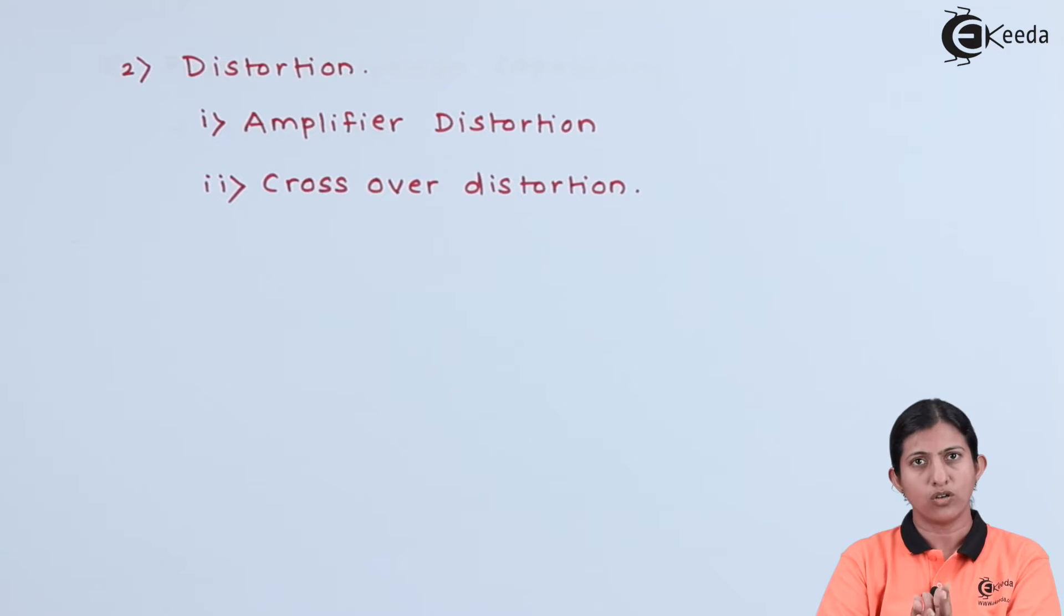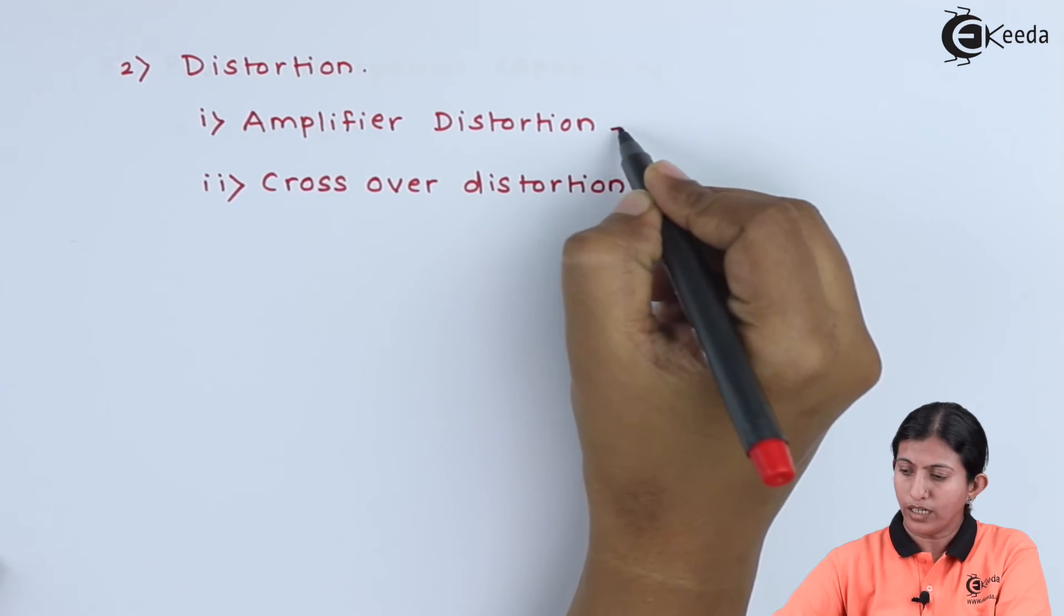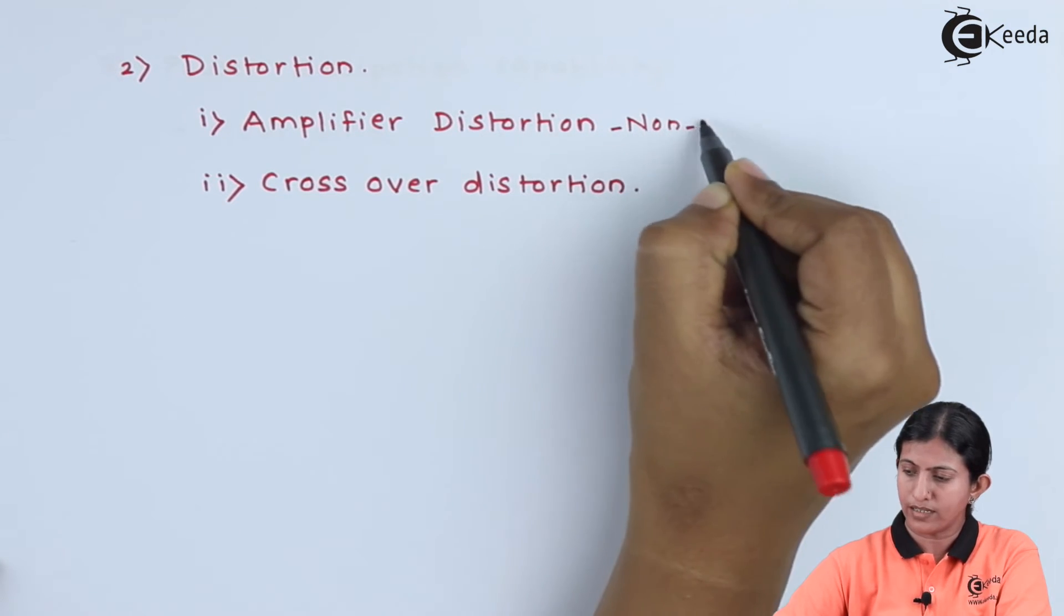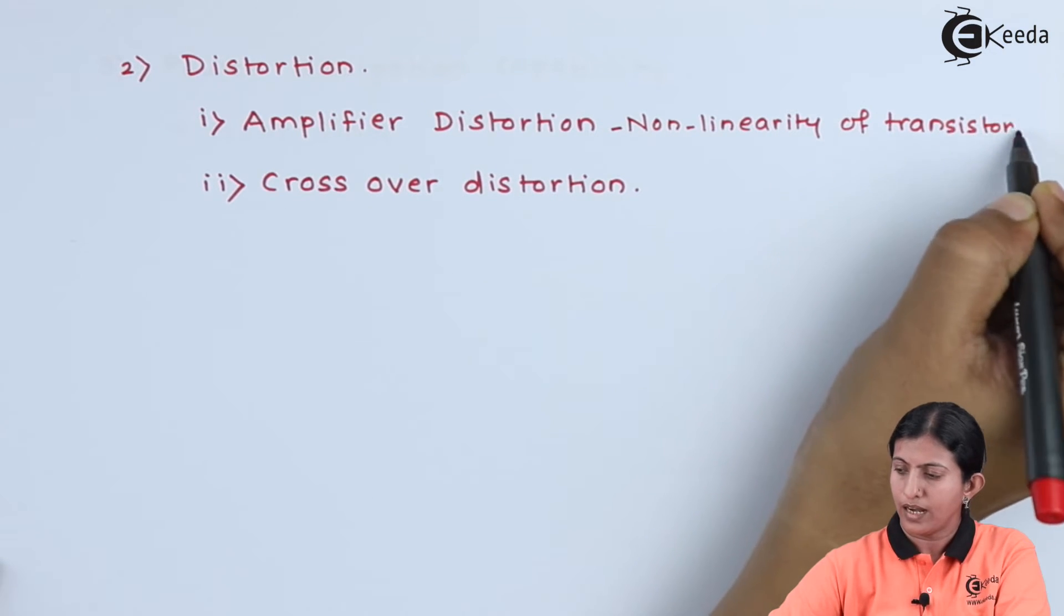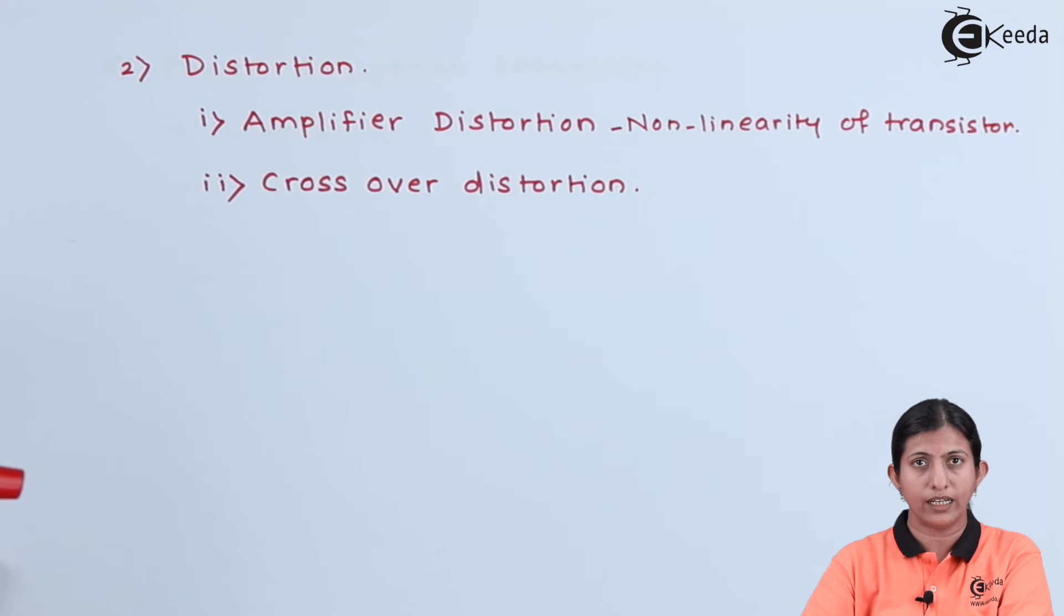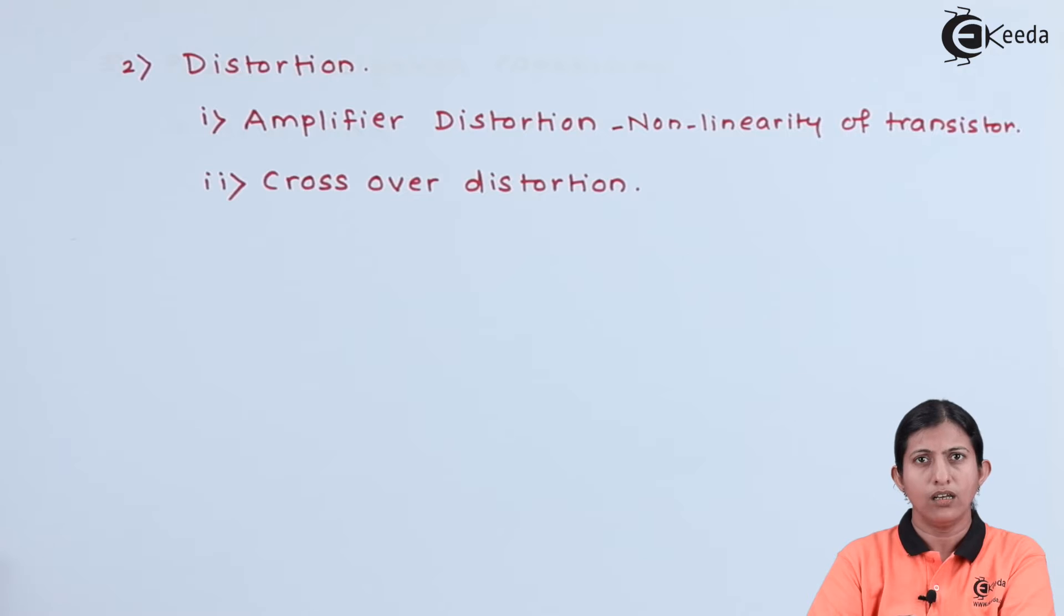There are two distortions: amplitude distortion and crossover distortion. Amplitude distortion basically results due to non-linearity of the transistor, and because of that non-linearity it will not amplify the output signal for the entire input frequency, and because of that, distortion takes place at the output.